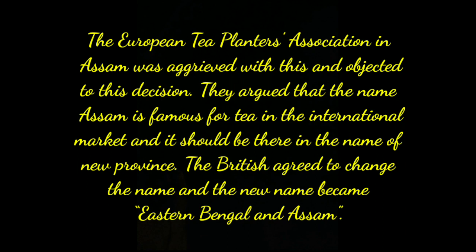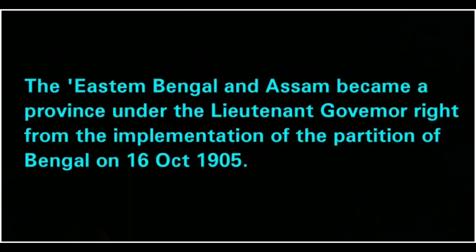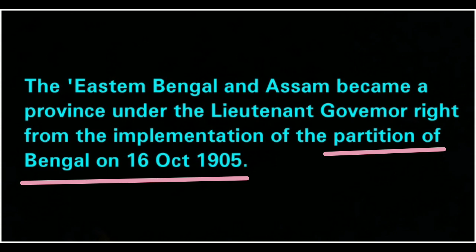The European Tea Planters Association in Assam argued that the name Assam is famous for tea in the international market, so it should be included in the name of the new province. After that, the British agreed to change the name and the new name became Eastern Bengal and Assam. This province came under the Lieutenant Governor right from the implementation of the Partition of Bengal on 16 October 1905.